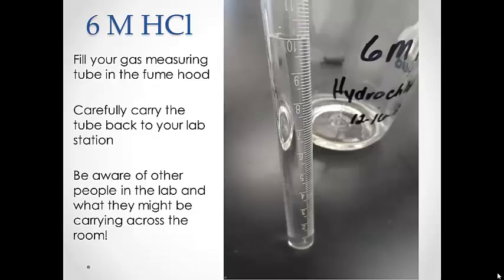In the fume hood, add about 10 milliliters of 6 molar hydrochloric acid to the gas measuring tube. It is important to be aware of what is going on around you. There are other people carrying glass and acid, so be careful when you are moving back and forth.